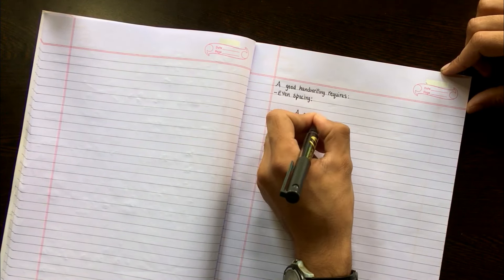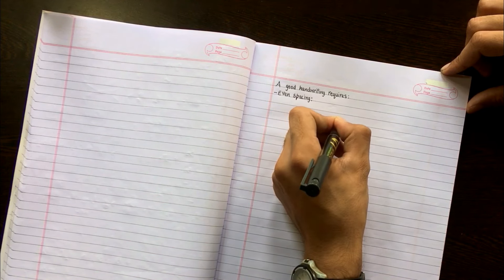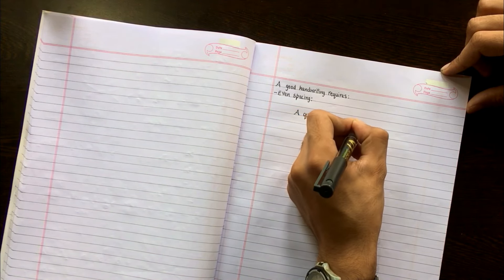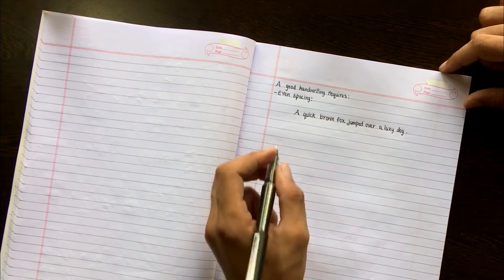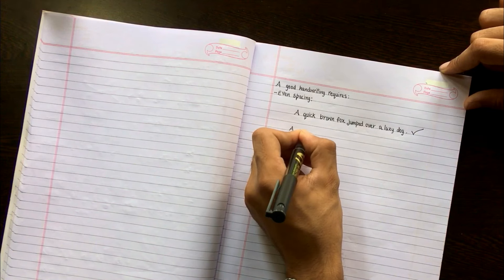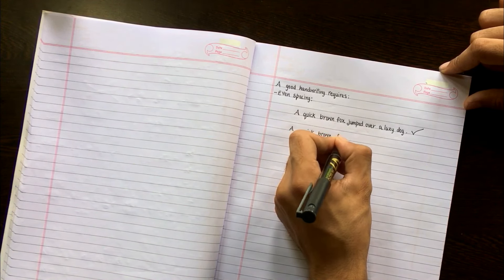Second thing: even spacing. Even spacing is a must if you want to have that neat and legible handwriting. If you write evenly, your notes will look fantastic and appealing to the eyes. This is the correct way of writing it, and here I will show you inconsistent or, I can say, not even spacing.